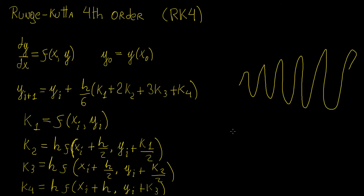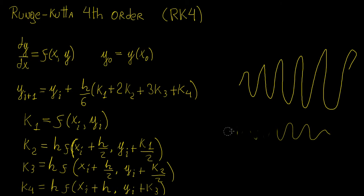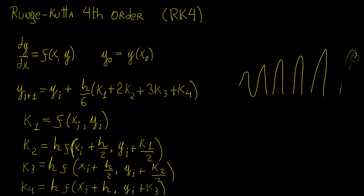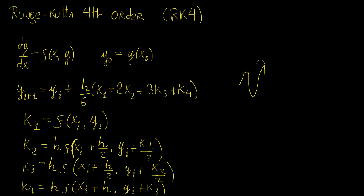It is actually quite stable because it retains the same shape and does not diverge. The Euler method is very unstable because it tends to diverge and essentially just explodes. The good thing about Runge-Kutta is that it is very accurate and it can be used to solve virtually any ordinary differential equation, even a nonlinear one, which can be quite tricky.